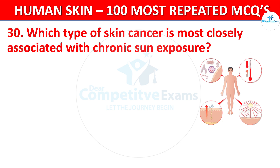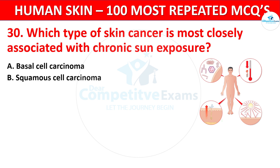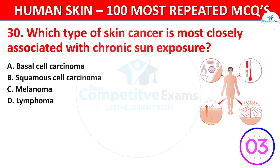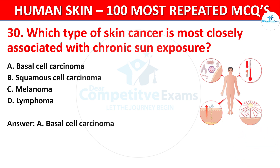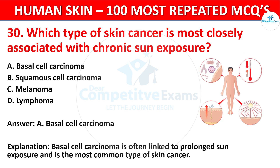Which type of skin cancer is most closely associated with chronic sun exposure? Your options: Basal cell carcinoma, Squamous cell carcinoma, Melanoma, or Lymphoma. The correct answer is Basal cell carcinoma. Basal cell carcinoma is often linked to prolonged sun exposure and is the most common type of skin cancer.